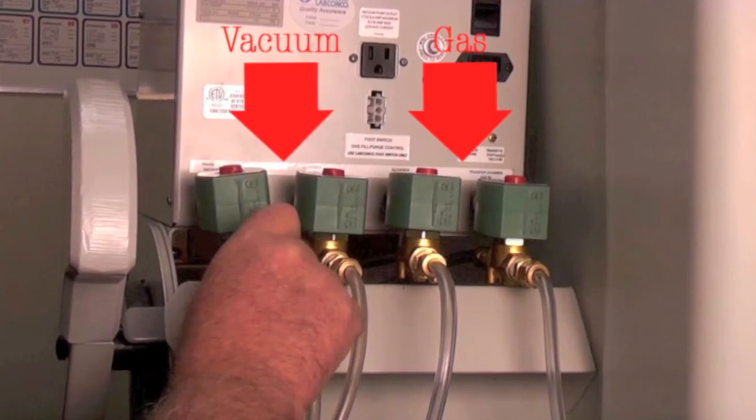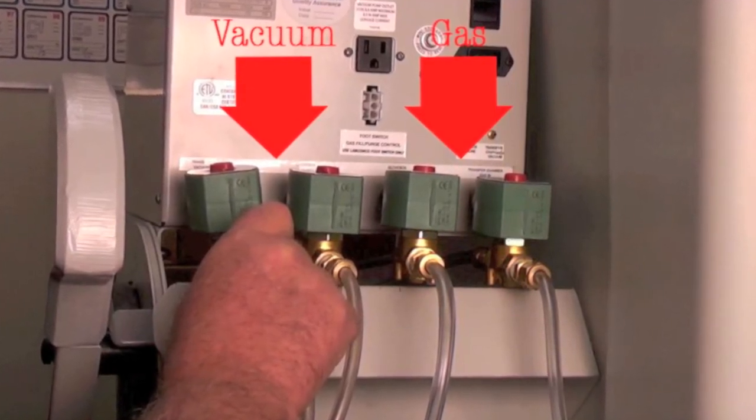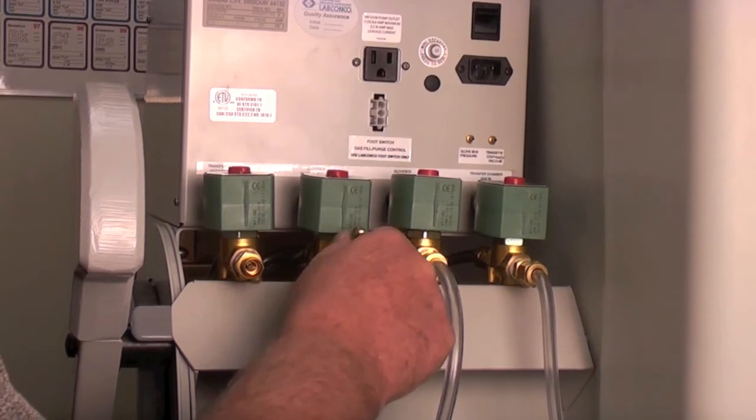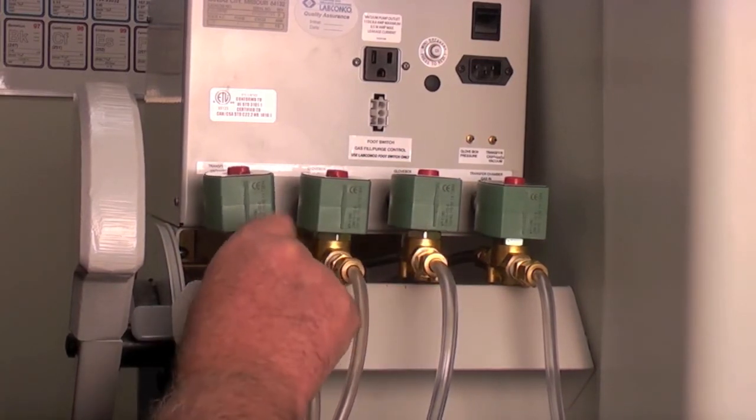Insert one end of the four tubing sections into each of the four solenoid valves on the pressure controller and tighten.